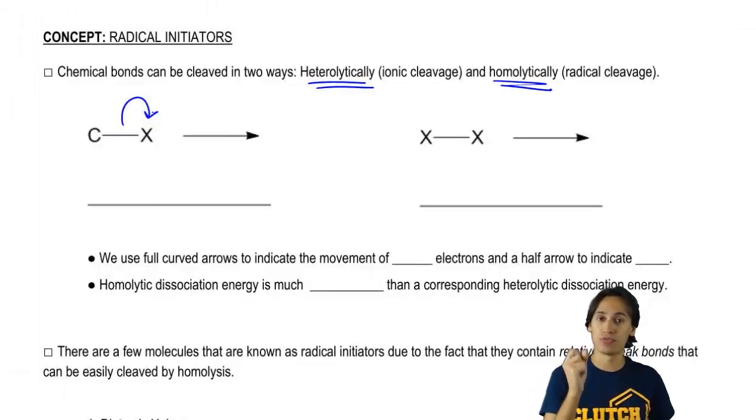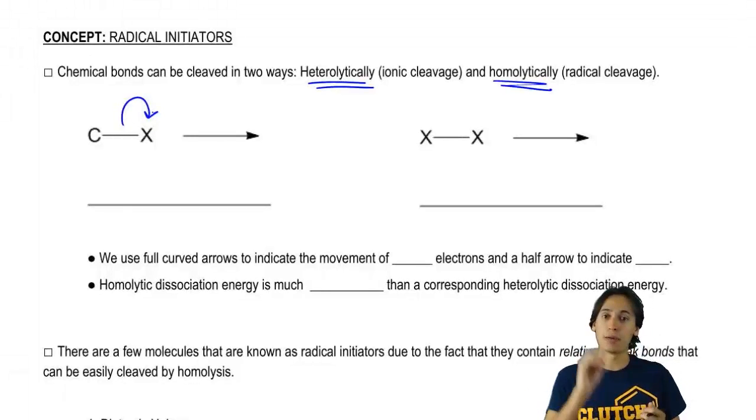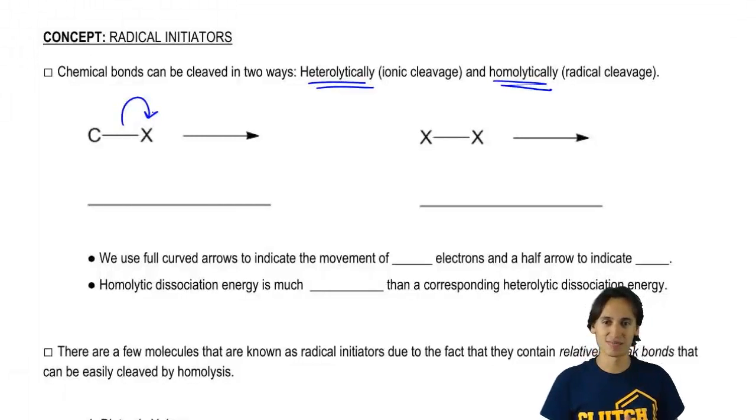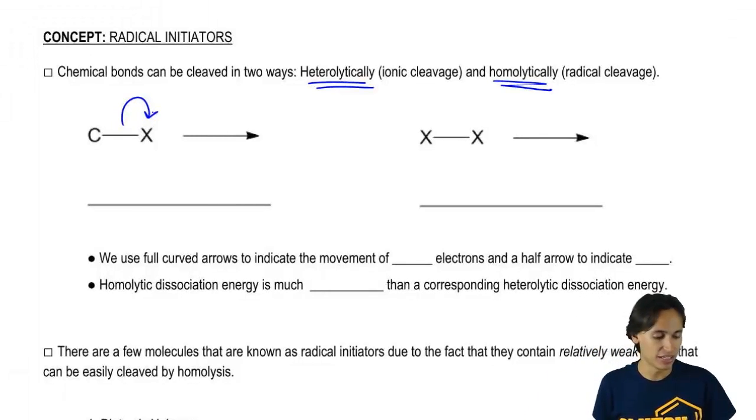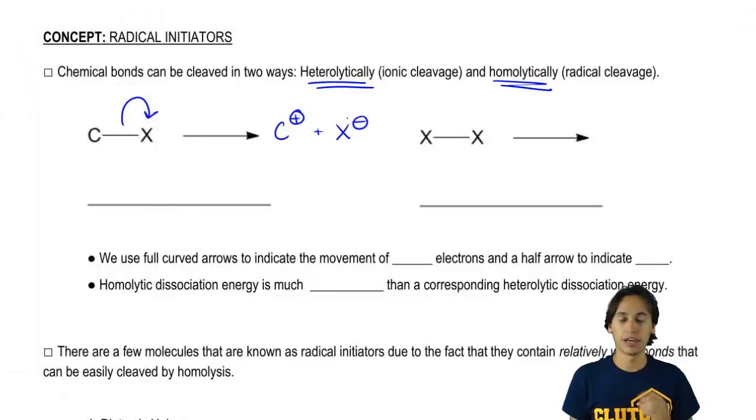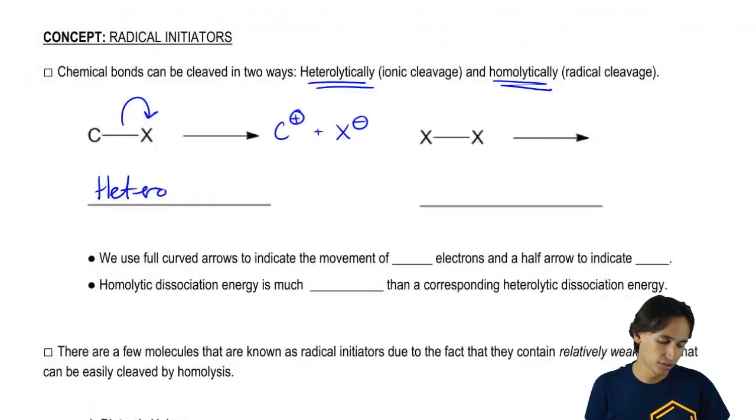Notice that I'm using a full arrow and that's showing that both electrons kind of pick up, pack their bags and move to the X. What I wind up getting is ions. So I wind up getting a C plus and an X negative. This would be heterolytic cleavage.